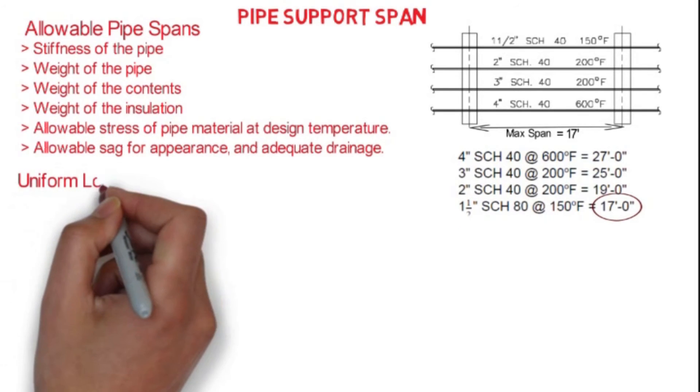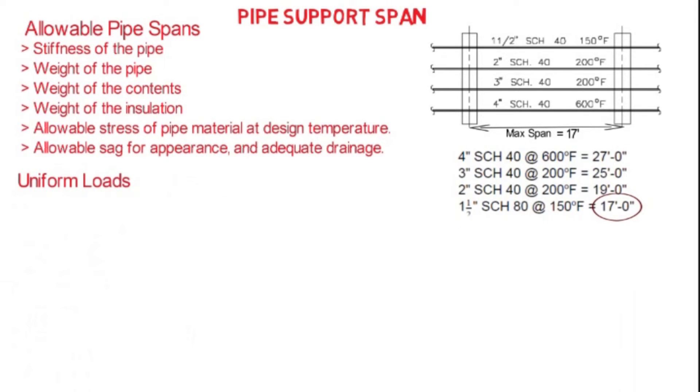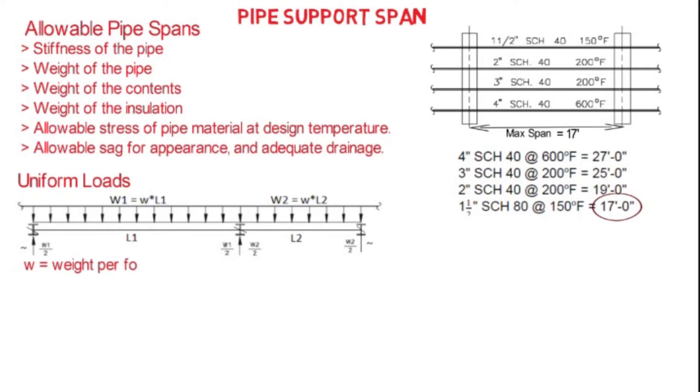To identify the support location, we have to know the loading on the piping system. For that we have two methods. One is to calculate uniform load. For this we should know what is the weight per foot of the pipe, including the water for the test load, including commodity and the insulation for operating load. And that load we need to multiply with the length of the pipe to get the total load between the support.